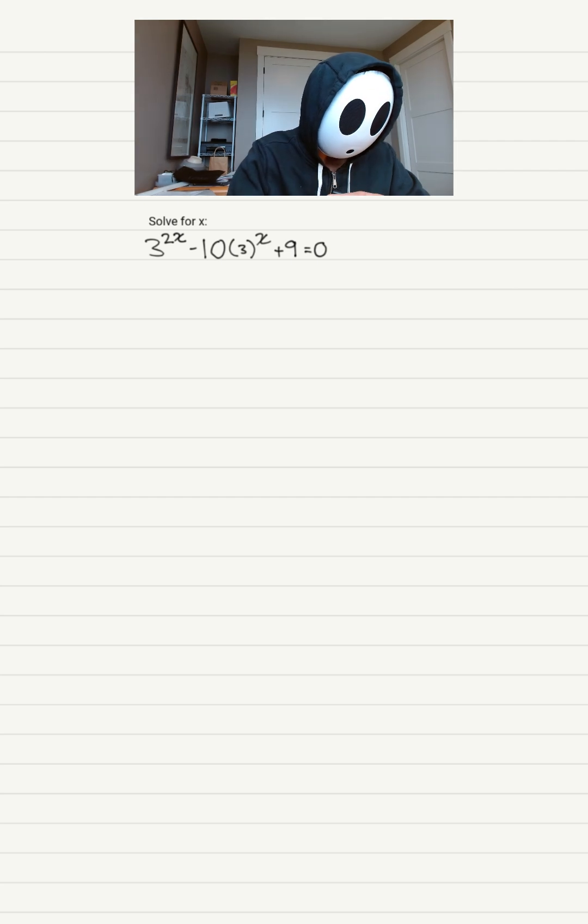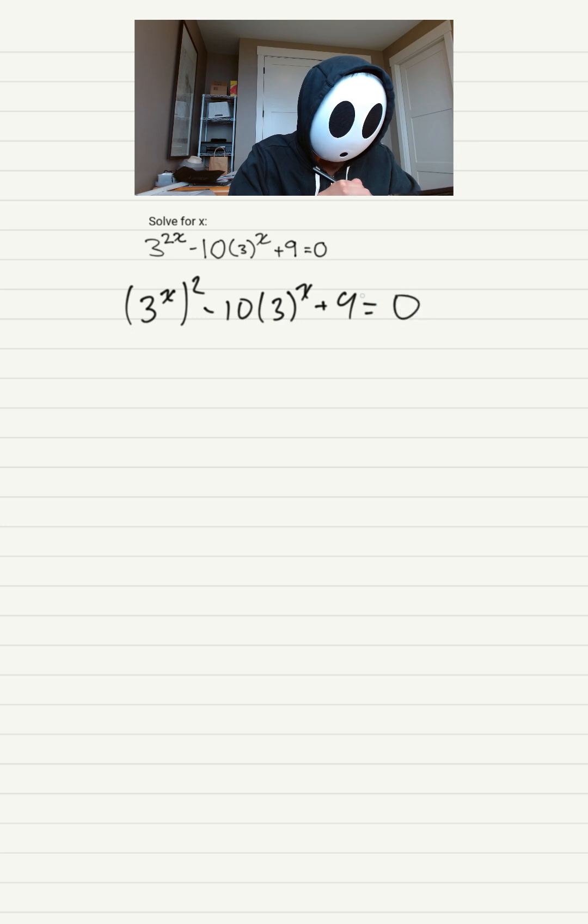Alright, let's rewrite this equation. Using the law of exponents, we'll write 3 to the power of x to the power of 2. This is the exact same as 3 to the power of 2x. Then we'll rewrite everything else the same, plus 9 equals 0.